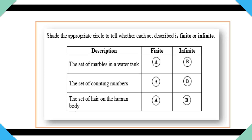Item 15. Shade the appropriate circle to tell whether each set described is finite or infinite. This question is testing whether or not you know what the words finite and infinite mean. Finite basically means having a limit. When something is finite, there is an end to it. Infinite, however, has no end. There is no limit to it. Let us look at our descriptions. The set of marbles in a tank. Of course, that is finite because we can count that, right? That has a limit. That has an end.